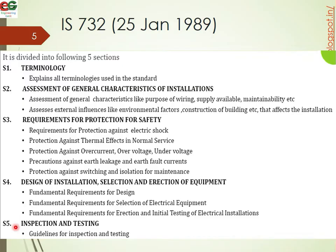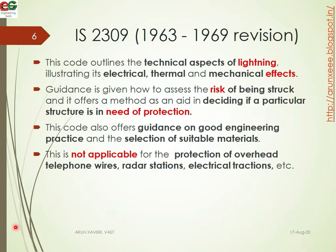In Section 5 we look at inspection and testing. The initial testing is done in Section 4, and Section 5 contains the inspection guidelines and testing procedures. So IS 732 has five sections: terminologies, general characteristics and assessment, protection for safety, design and installation, and finally testing and inspection. Next, we will go to the other IS codes.